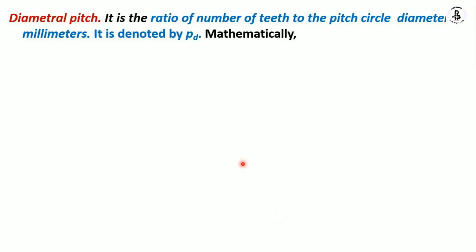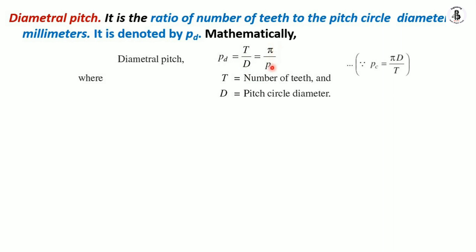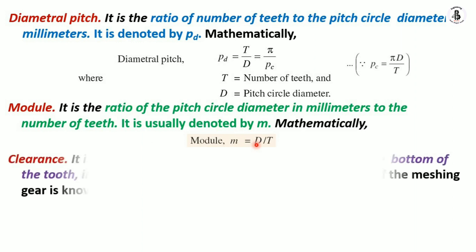Diametral pitch is the ratio of the number of teeth to the pitch circle diameter in millimeters, denoted by Pd. Mathematically: Pd = T/D = π/Pc, where T is the number of teeth and D is the pitch circle diameter. Module is the ratio of the pitch circle diameter in millimeters to the number of teeth, denoted by small m: m = D/T. This is a very important relation for gears.